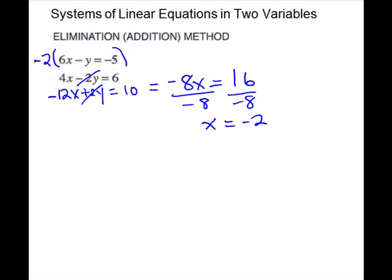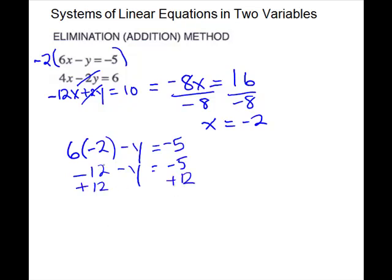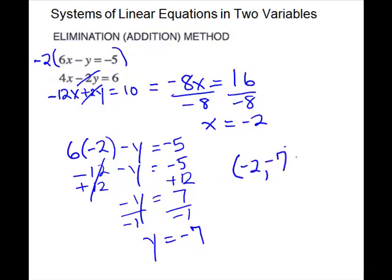x equals negative 2. I'm going to substitute that back into my original equation. So I have 6 times negative 2 minus y equals negative 5. This gives me negative 12 minus y equals negative 5. Add 12, so negative y equals 7, which means y equals negative 7.